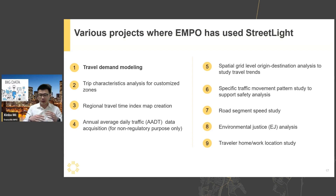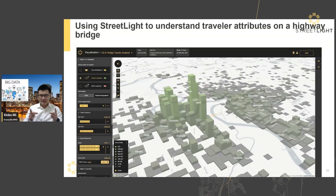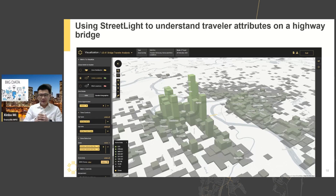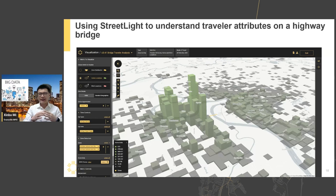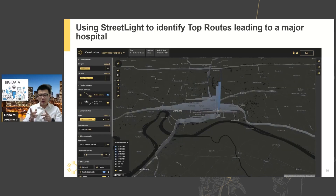I will focus more on the usage in travel demand modeling in the next few slides. This map shows a home location study for travelers using the US-41 Ohio River crossing bridge. As you can see on the map, the majority of them are living on the left-hand side — that is the Kentucky side — much more than on the Indiana side.